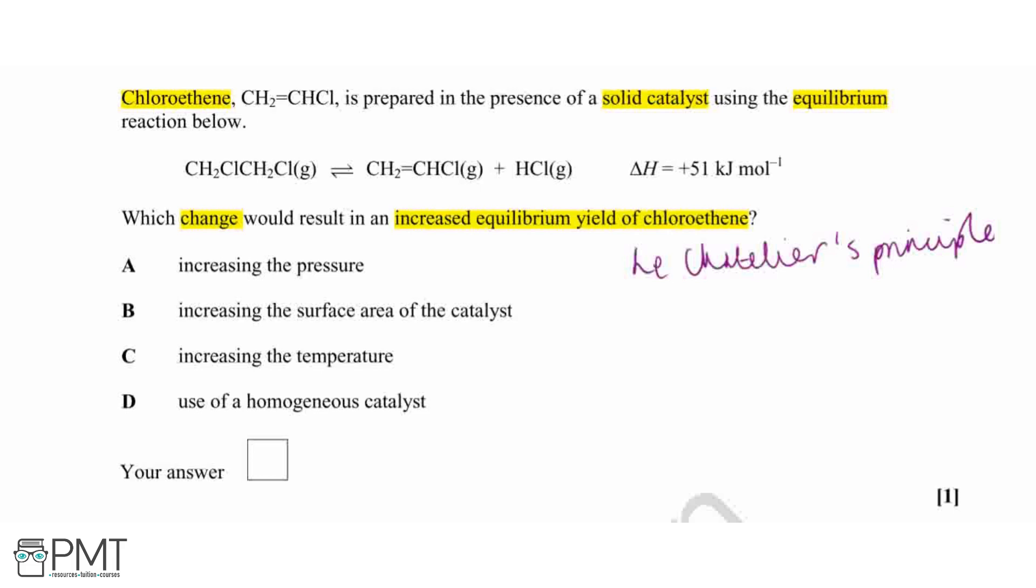For example, if we increase the pressure of our equilibrium system, then the equilibria will favor the reaction which reduces that pressure back down again. For our system here, the reverse reaction will be favored because this produces the smallest number of moles—we produce one mole in the reverse reaction and the forward reaction produces two moles. Therefore, increasing our pressure will not increase our equilibrium yield of chloroethene. So we can eliminate option A.